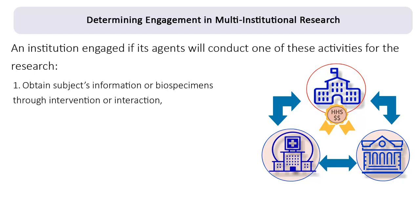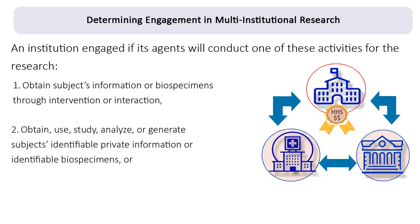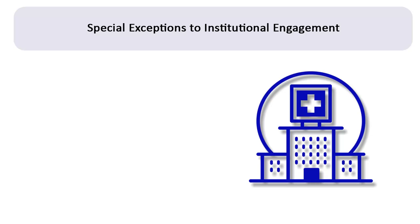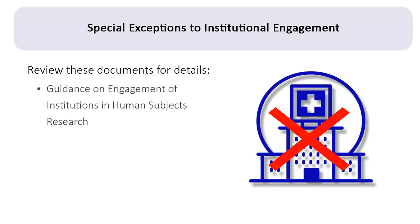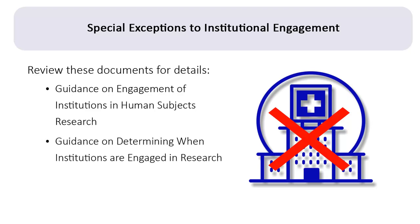1. If they obtain information or biospecimens through interventions or interactions with individuals and use, study, or analyze the information or biospecimens. 2. If they obtain, use, study, analyze, or generate identifiable private information or identifiable biospecimens. 3. If they obtain the informed consent of research subjects. In addition, there are times when certain specific conditions are met such that OHRP would consider an institution to be not engaged, even if its employees or agents carry out activities that constitute human subjects research. Check out OHRP's guidance on engagement of institutions in human subjects research and OHRP's guidance determining when institutions are engaged in research for a non-exclusive list of examples illustrating these conditions.